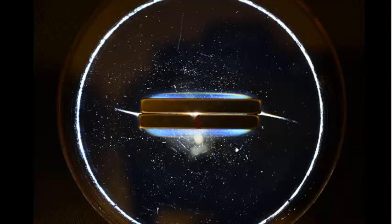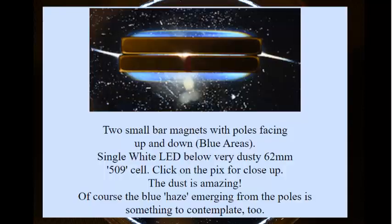This image here really jumped out at me. This is a couple of magnets with a background — it's a very dusty ferrolens; it looks kind of neat, very cosmological. This is two small bar magnets with the poles facing up and down — north and south. They're using a single white LED below their very dusty ferrocell. They say, of course, the blue haze emerging from the poles is something to contemplate.